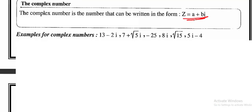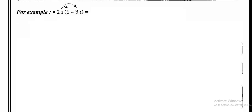We can write a complex number in the form a + bi. Examples of complex numbers: 13 - 2i, 7 + √5·i, -25, 8i√15, 5i - 4.